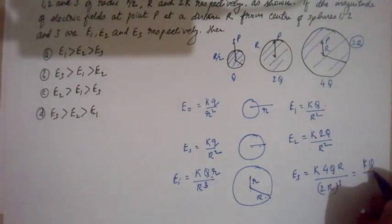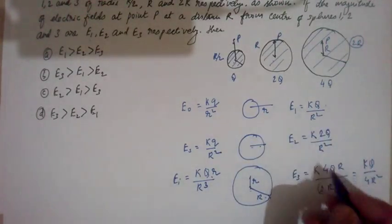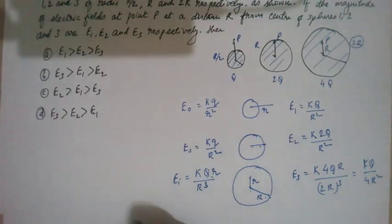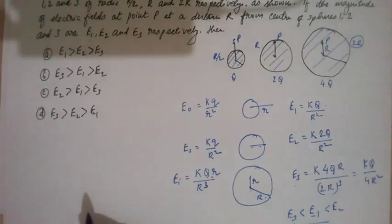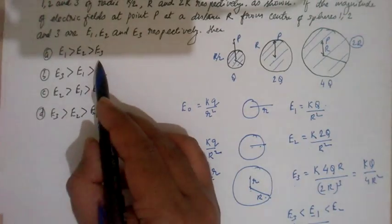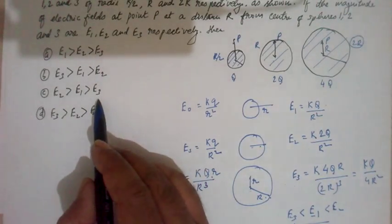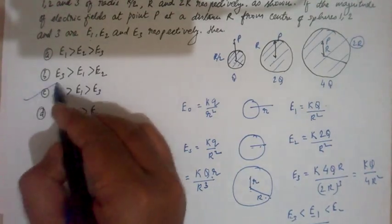If I solve this, this is KQ/r², 2KQ/r², and KQ/4r². So this is minimum. E3 is less than E1, which is less than E2. So E3 is minimum and E2 is maximum. C option.